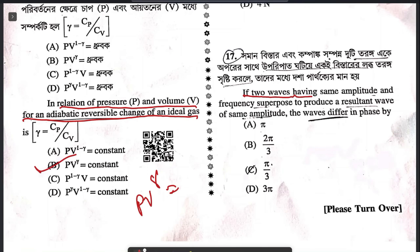Question 17: if two waves having the same amplitude and frequency are superimposed to produce a resultant wave of the same amplitude, the waves differ in phase by 2π/3, that is 120 degrees.